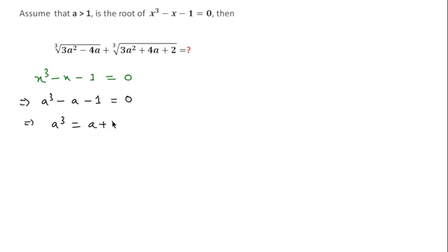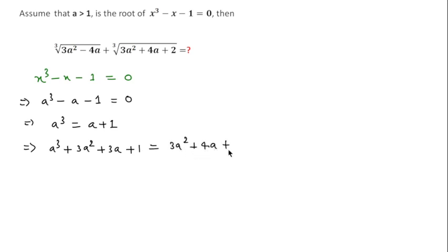This can also be written as a² + 3a² + 3a + 1 = 3a² + 4a + 2. I am adding 3a² + 3a + 1 to both sides. This means the left side becomes (a + 1)³, using the formula (a + b)³, which equals 3a² + 4a + 2.